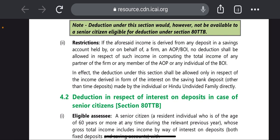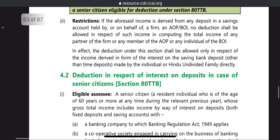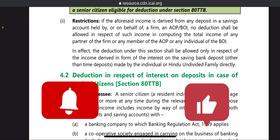In effect, if there is an AOP, BOI, or firm — whether a member, partner, or individual — no deduction shall be allowed in respect of such income when computing their total income. The deduction under this section shall be allowed only in respect of income derived in the form of interest on saving bank deposits other than time deposits made directly by an individual or HUF.